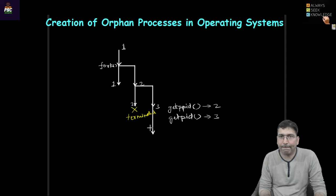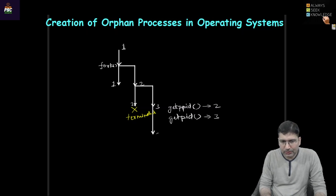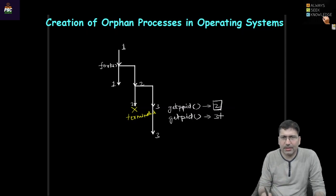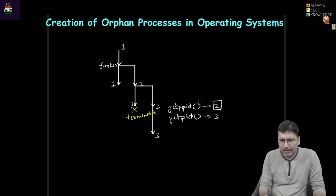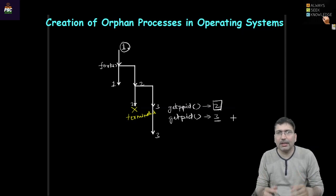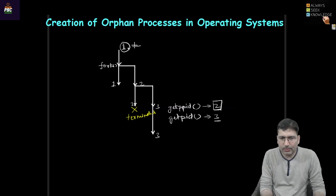When process three was executing, its parent ID was two. But if process two has been terminated, there are generally two methods — in theory, in OS classes we will discuss. One option is cascading termination; another option is we replace this process ID and make the init process the parent of this orphan process. So the mother process will become the parent for every orphan process in the system.